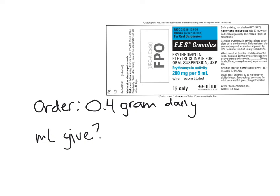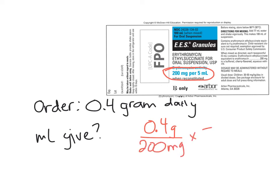Our D in this example is 0.4 grams. We go to look at that label for H and Q, and we find our dosage strength right there: 200 milligrams per five milliliters. Remember from the lecture, if I were to go ahead and divide right now, I'm going to get this answer wrong. It's really important to make sure D and H are matching units. Right now our units are grams on top and milligrams on the bottom, so we need those to match.